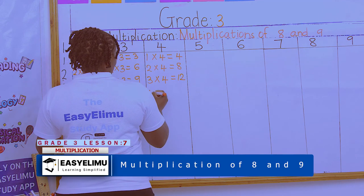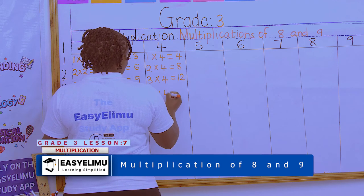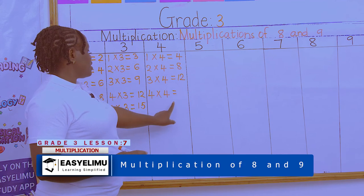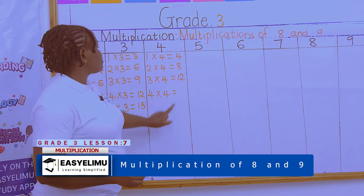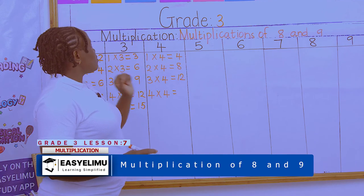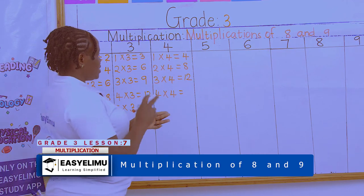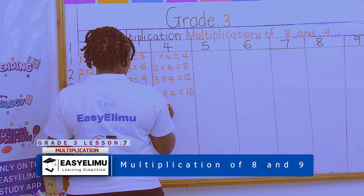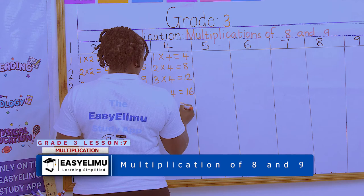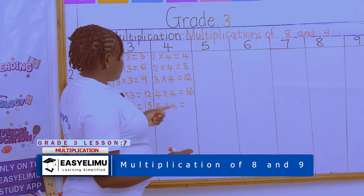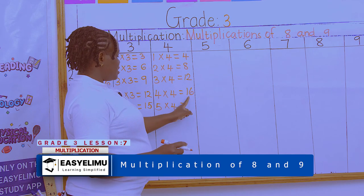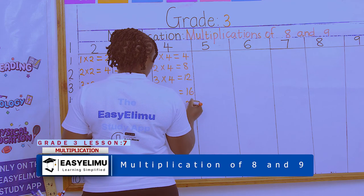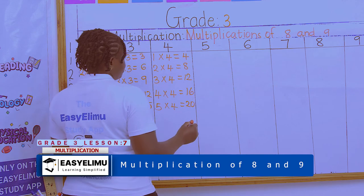4 × 4 is 12 + 4 = 16. 5 × 4 is 16 + 4 = 20. We are counting in fours, adding 4 to the previous answer each time. You can finish the remaining multiplication table for 4 on your own.